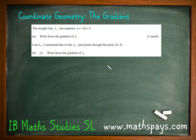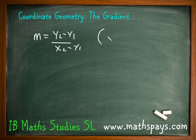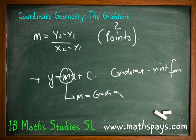To recap: if you're given two coordinates, use m equals y2 minus y1 over x2 minus x1. Otherwise, use y equals mx plus c — the gradient y-intercept form — where m is the gradient. This is the foundation of much of our coordinate geometry, particularly for more challenging lines. Make sure you watch the next lesson on gradients of parallel and perpendicular lines, as well as the equation of a straight line.